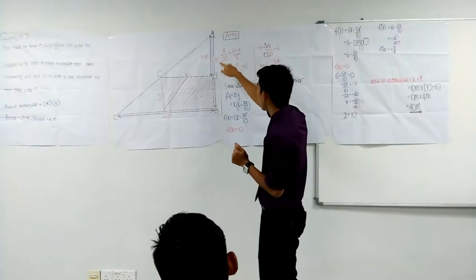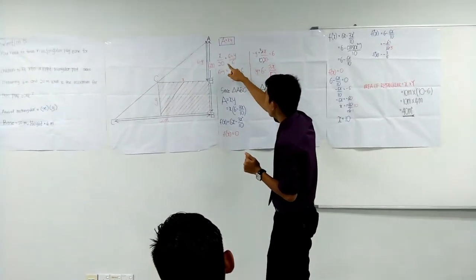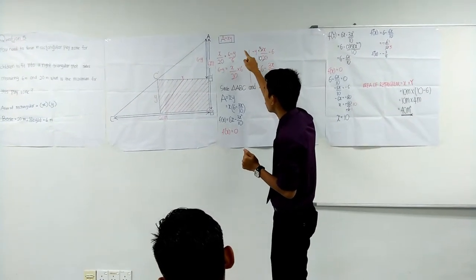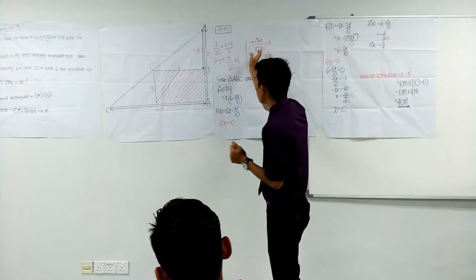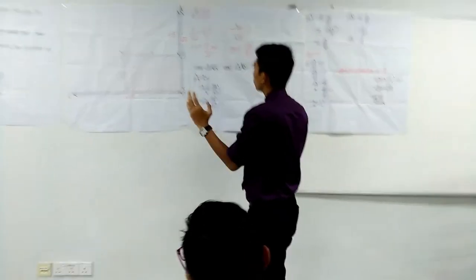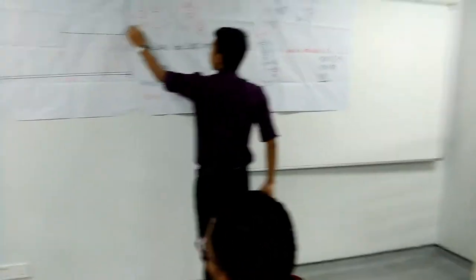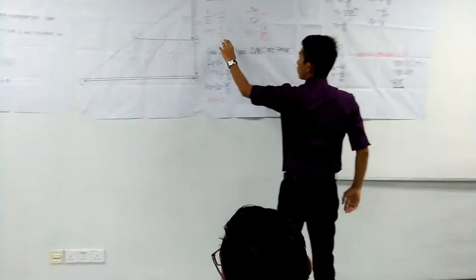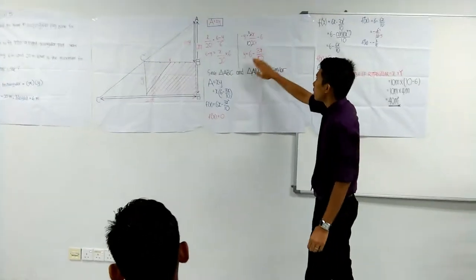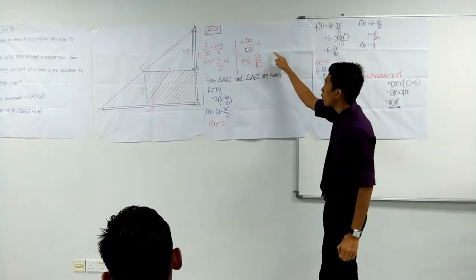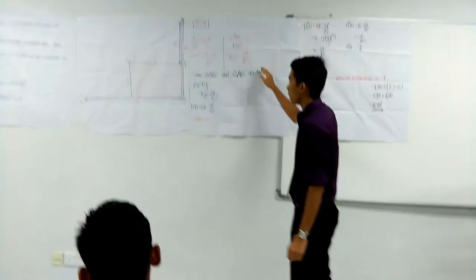X divided by 20 equal to 6 minus Y divided by 6. And then we want to know Y. 6 minus Y is equal to 3X divided by 10, so Y equal to 6 minus 3X divided by 10.